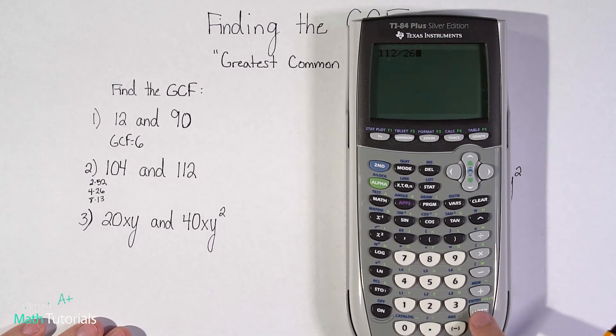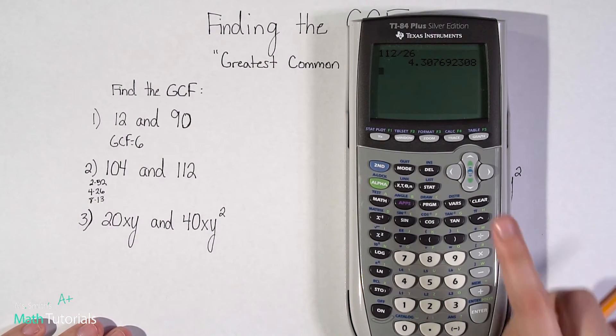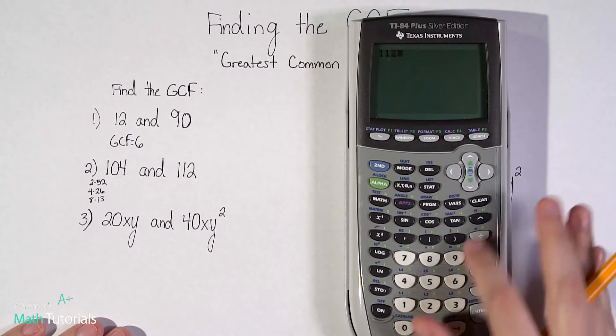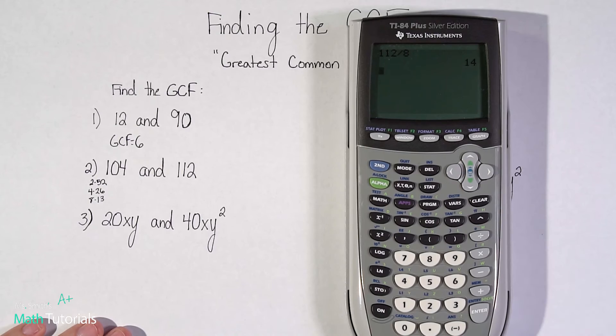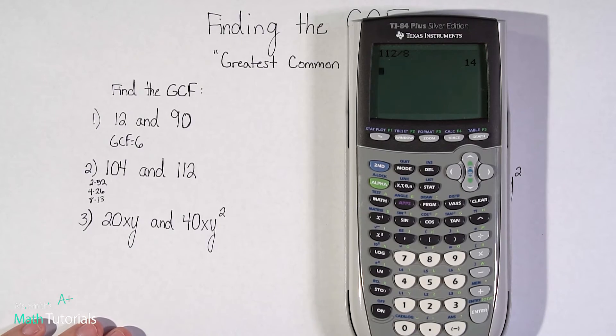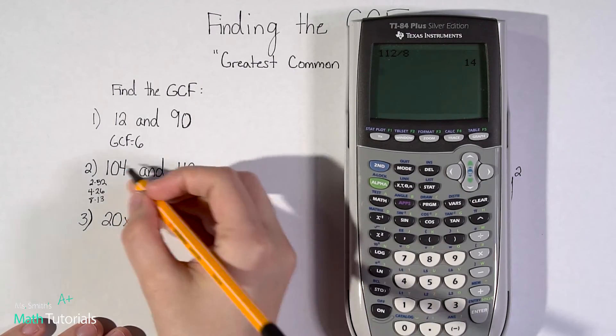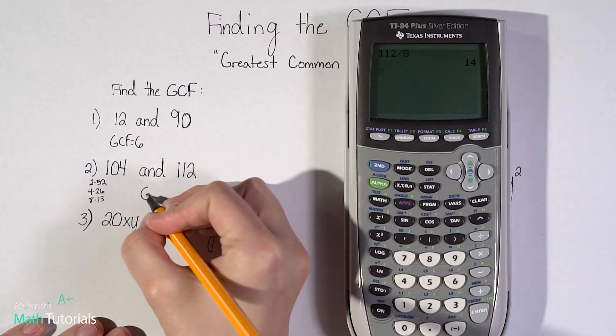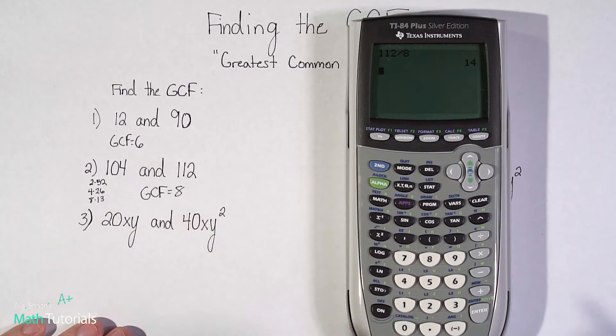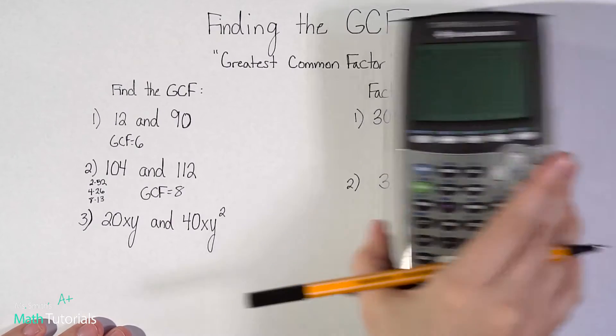That's not a factor either. All right, what about 13? Nope, keep going down. What about eight? There we go. So I see that eight times 14 is going to give me 112. So what is these two numbers GCF? The GCF is eight. That is their greatest factor in common.